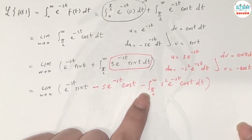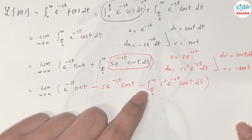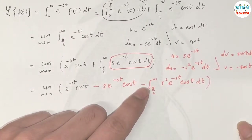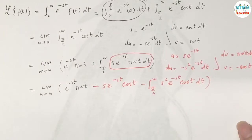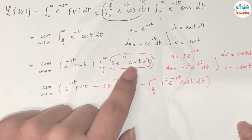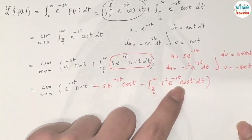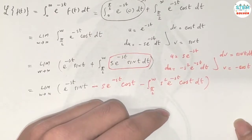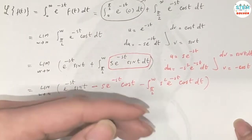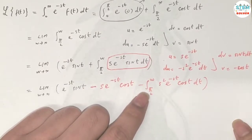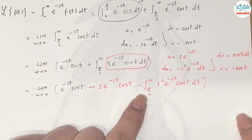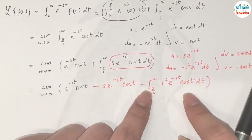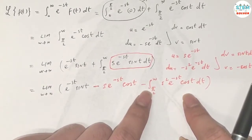Now we still have an integral remaining. If we were to keep integrating by parts, we would cycle back and forth between sine and cosine indefinitely and never eliminate the integral. So here is the key observation: we recognize that the integral we started with appears again on the right side.